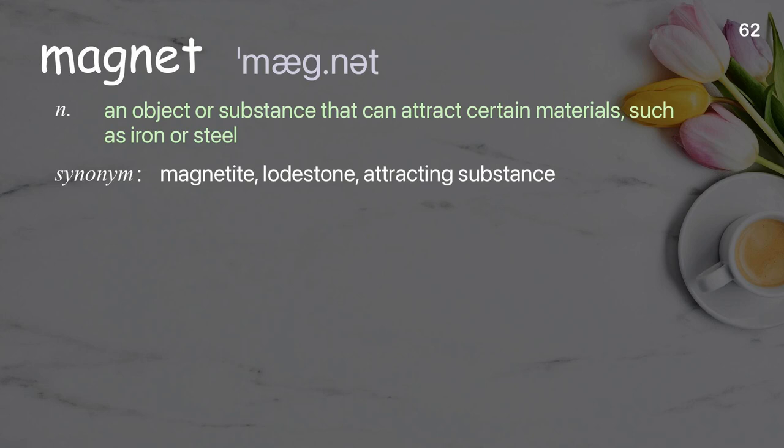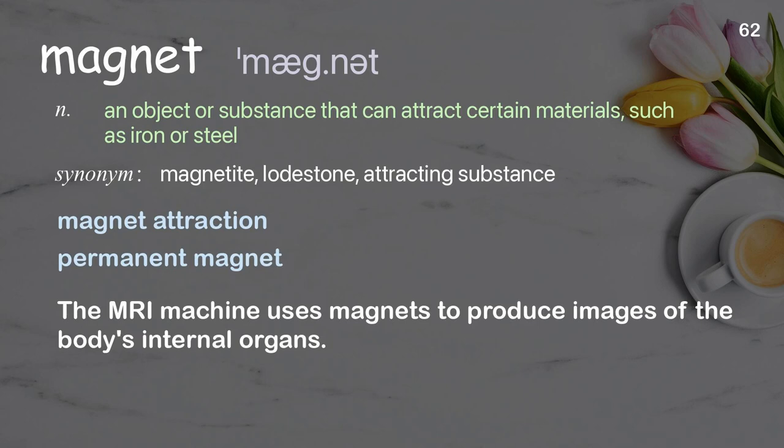Magnet: an object or substance that can attract certain materials such as iron or steel. Examples: magnet attraction, permanent magnet. The MRI machine uses magnets to produce images of the body's internal organs.